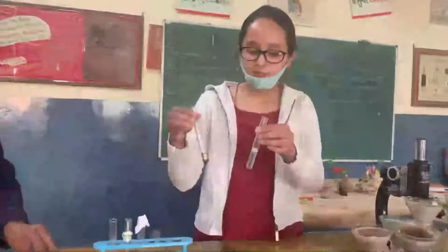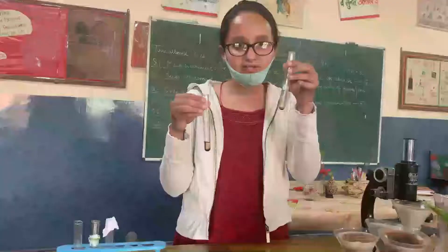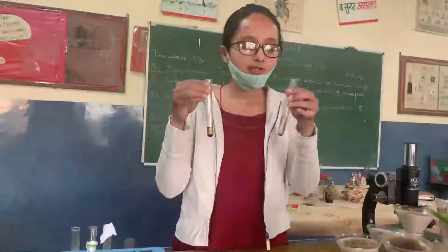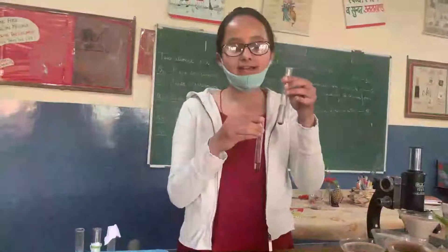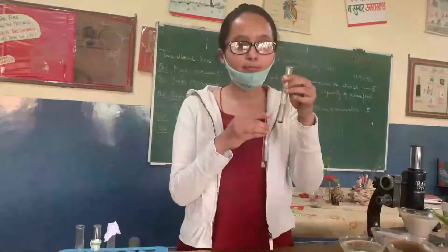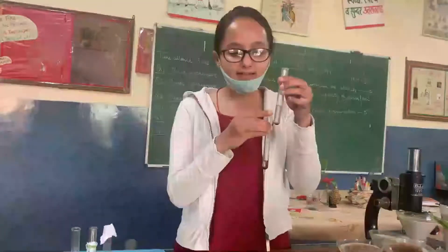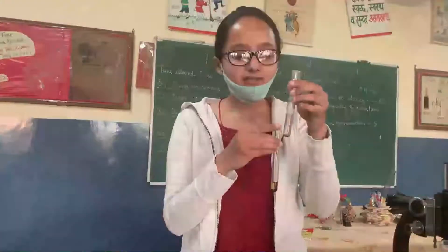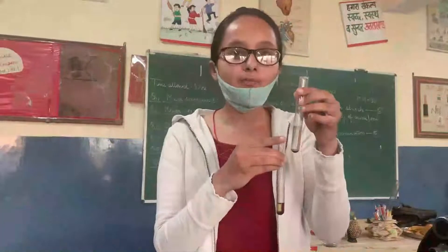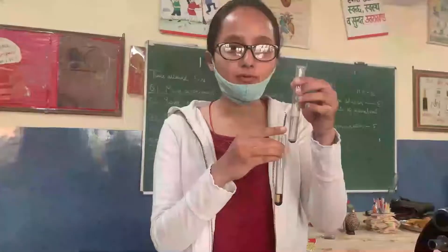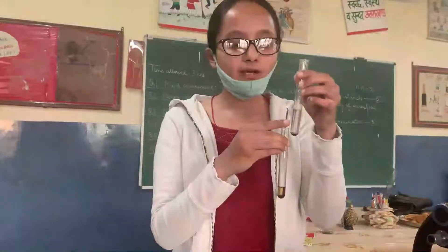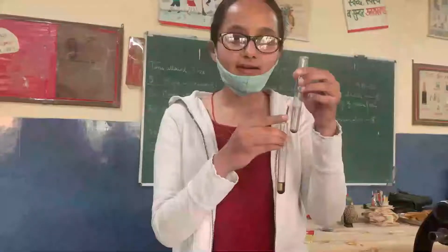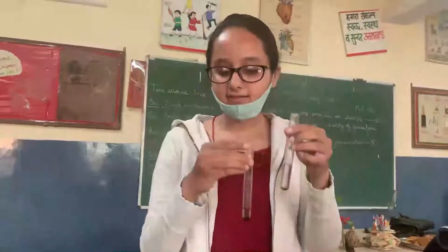Here we have two tubes — one experimental tube and the other the control tube. We can observe that in the experimental tube, the salivary amylase in our saliva decolorizes the solution because all the starch present gets digested and converted into maltose. So after adding the iodine solution, we can observe that there is no blue-black color, because all the color gets decolorized due to the action of salivary amylase.